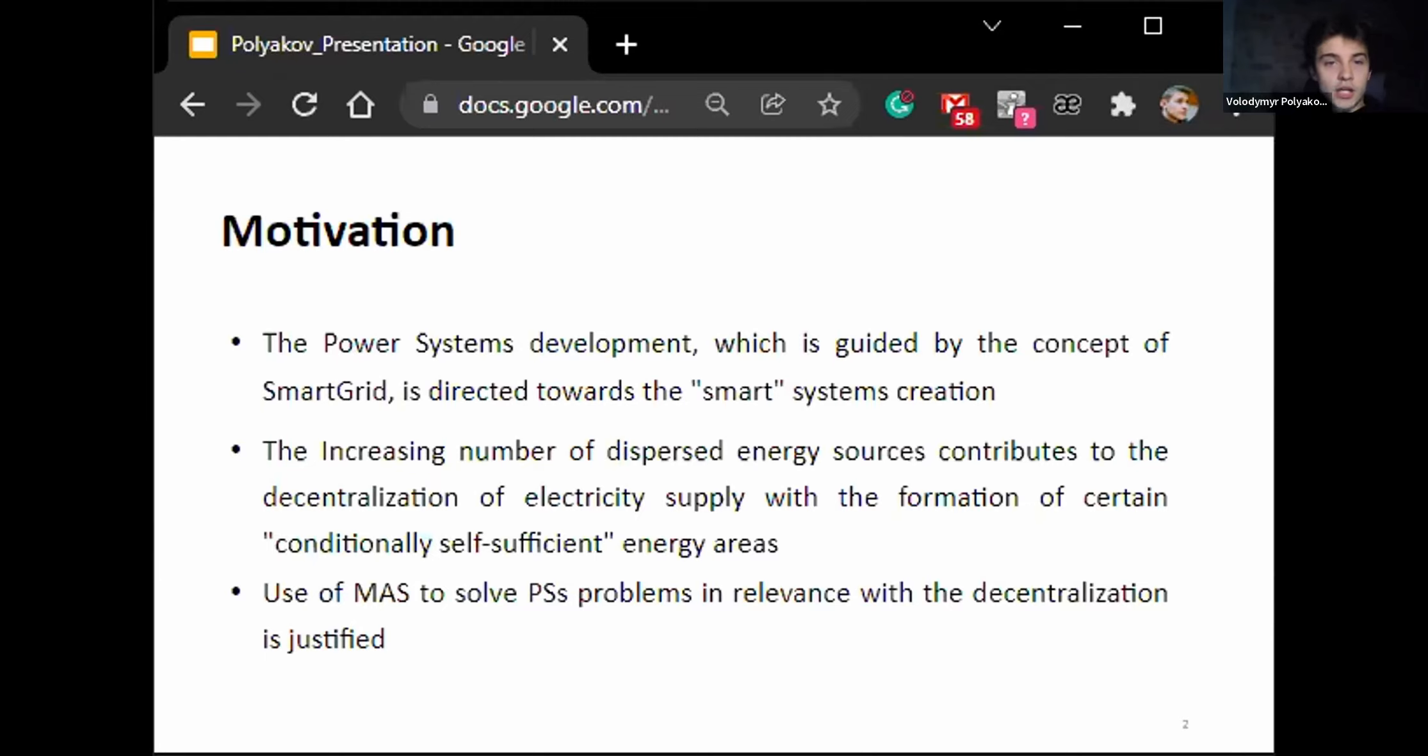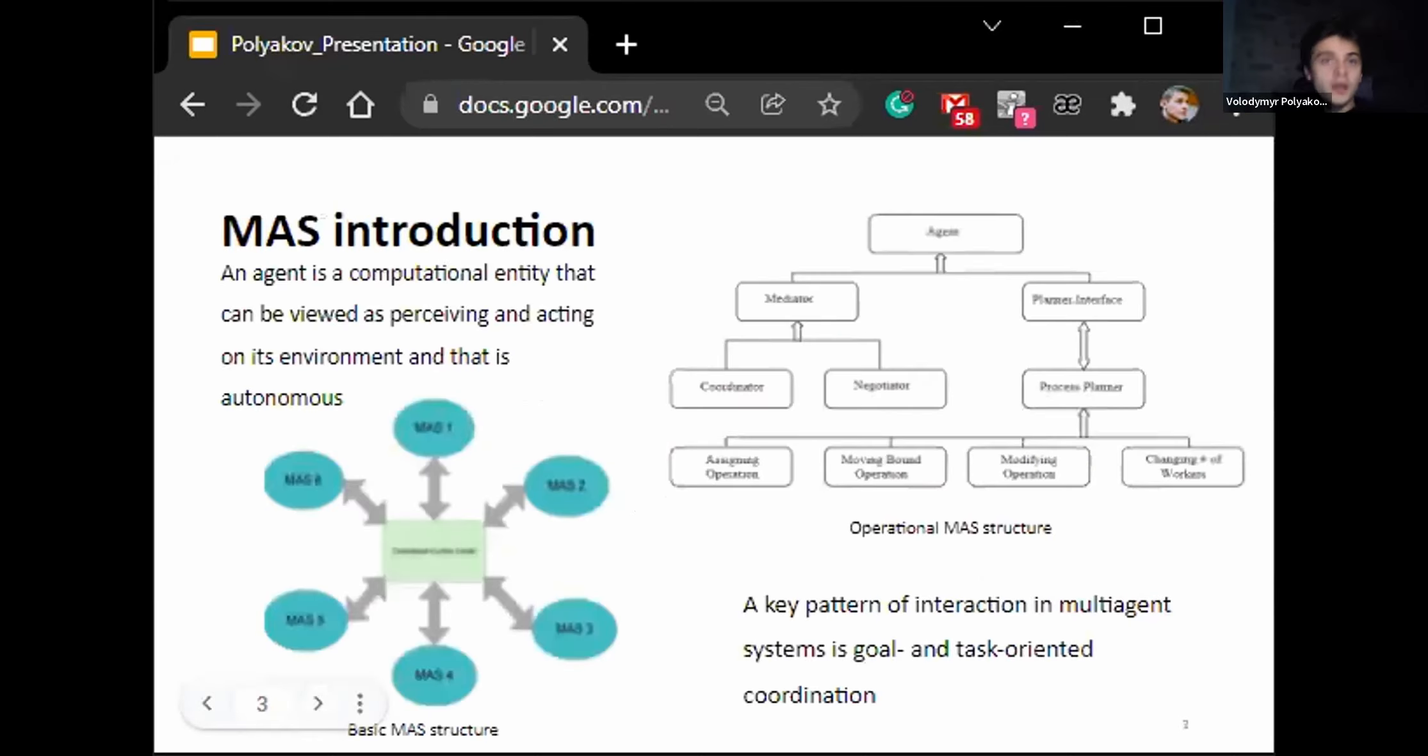On top of that, relevant information should be provided to the top level of management hierarchy, as the hierarchical principle of power systems management will be maintained in the future. Using multi-agent systems to solve such power systems problems in relevance with the decentralization seems reasonable and is characterized by the involvement of various means of artificial intelligence, as well as hybridization with various mathematical models. On the picture on the left, you can see very basic centralized multi-agent systems. On the right is an operational system which has actual implementation in the industry.